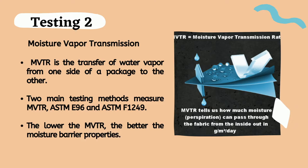ASTM E96 uses a moisture chamber to assess moisture resistance. A substrate barrier material divides the chamber vertically — one chamber is dry, the other is damp. ASTM F1249 uses infrared detectors to monitor changes in relative humidity on the dry side of a film in a chamber similar to ASTM E96. The lower the MVTR, the better the moisture barrier properties.